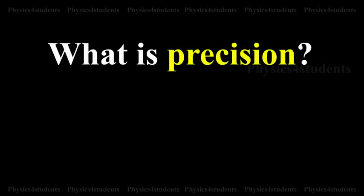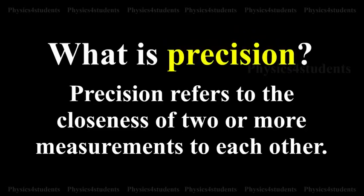What is precision? Precision refers to the closeness of two or more measurements to each other.